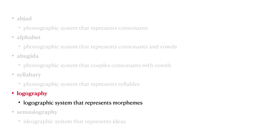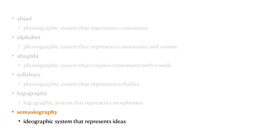In a pure logography, the writing system only represents morphemes and does not also represent sounds. No writing system is a pure logography. In a semasiography, we have an ideographic writing system where each symbol directly represents an idea. There are no known pure semasiographies. Bliss Symbolics is about as close as we get, but even Bliss Symbolics brought in some phonographic information.